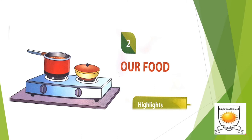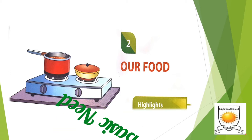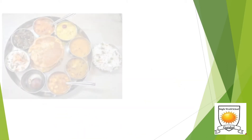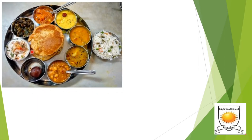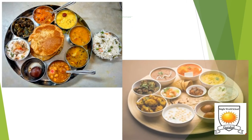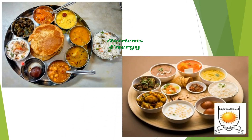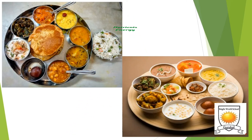This is our lesson number two: Our Food. When it comes to food, we all know food is a basic need of all living things. Food gives us nutrients and energy. There are different types and sources of food. As you can see here, there are pictures of different kinds of meals we eat, and all these foods give us nutrients and energy.